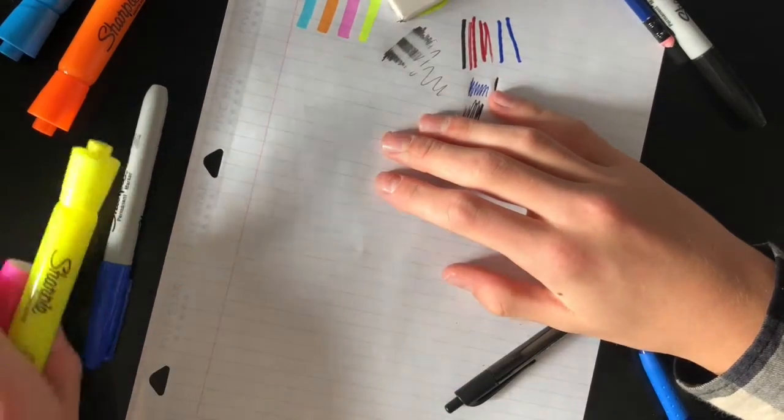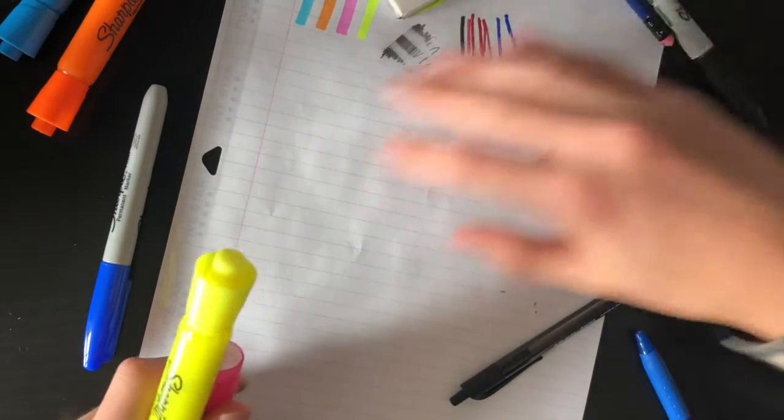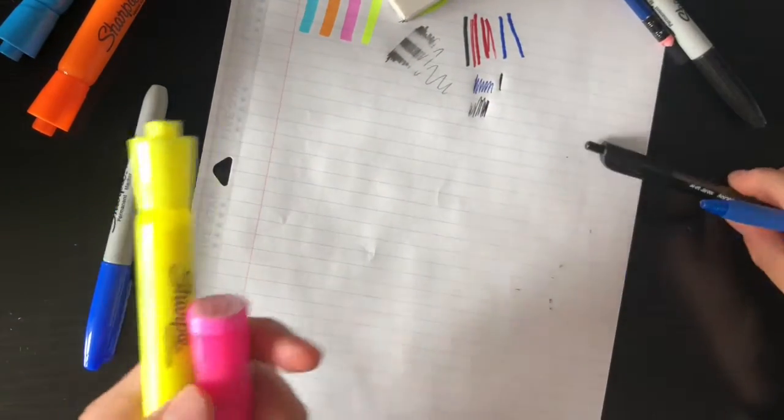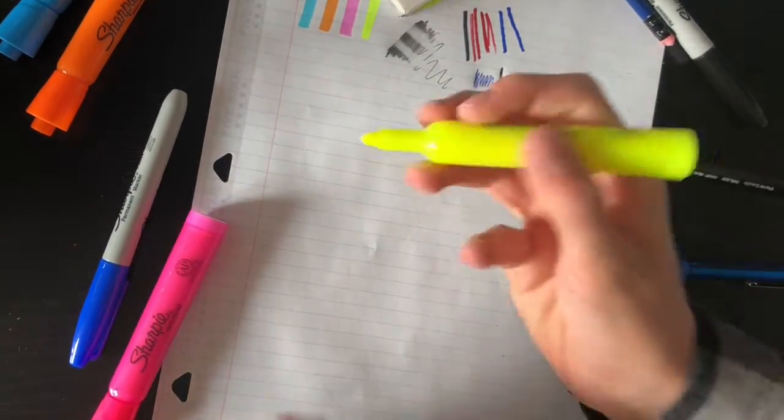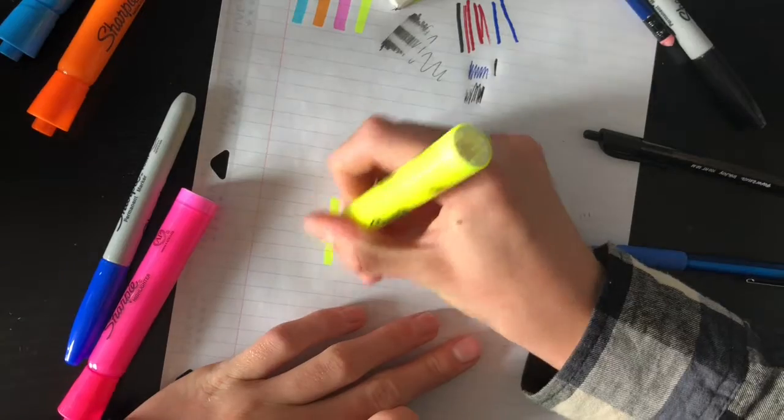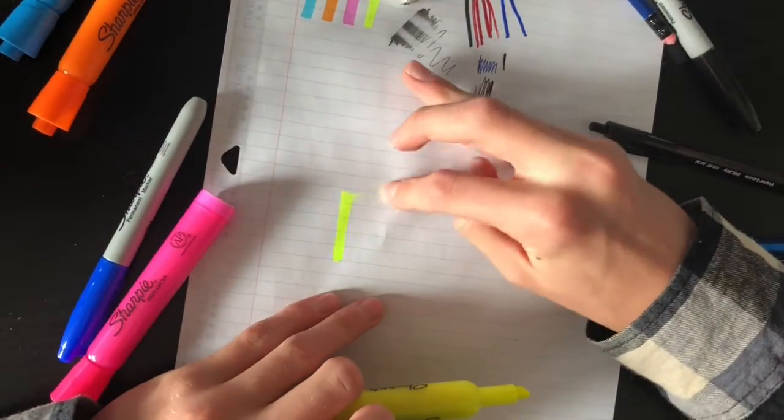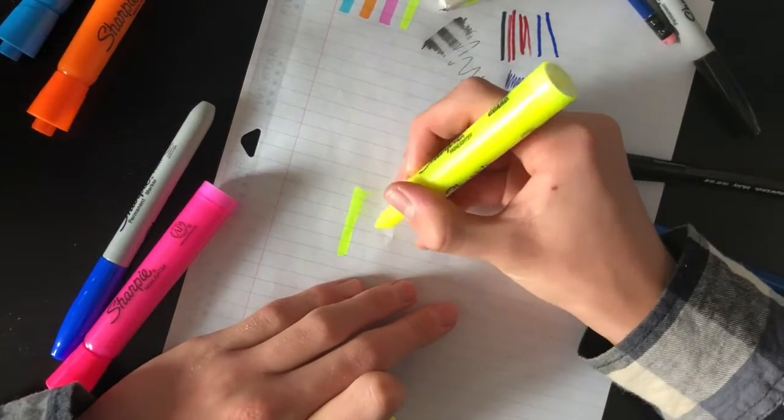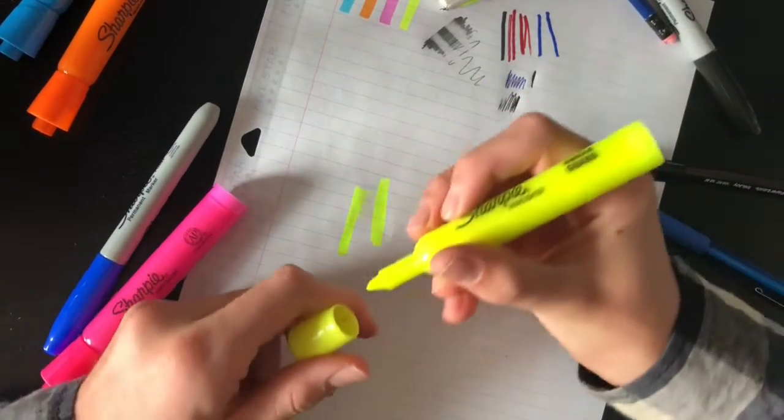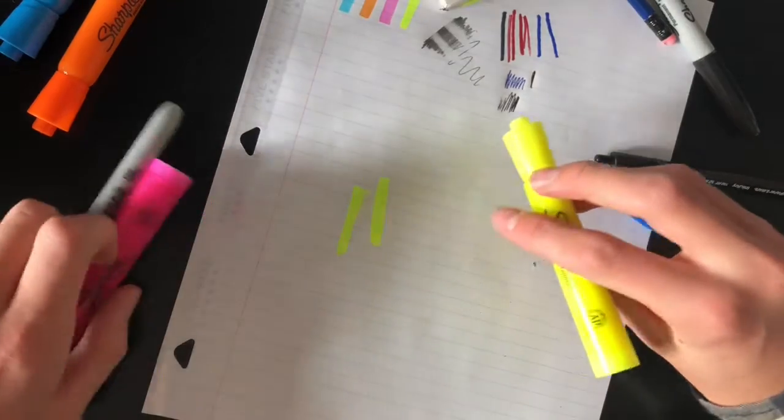Alright, now I'm going to try and layer these markers together and then layer all the others to see how well they work. Now these Sharpies are supposed to be smear proof. So I'm just going to test that out right now. Okay, they're smearing a bit. I'll leave this next one to dry a bit after. And we'll get back to that later.